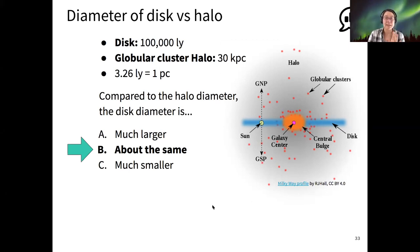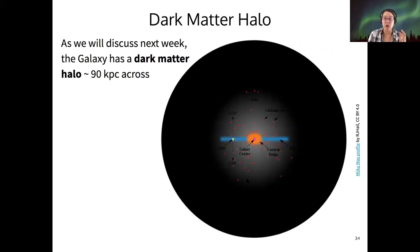And then this entire system is embedded within a much larger dark matter halo. So we can't see this, but we can infer its presence through gravitational signals. And we'll talk about that next week. The dark matter halo is about 90 kiloparsecs across. So it's by far the most dominant component of our galaxy and it in fact contains most of the total mass. So when we talk about the visible mass versus the total mass of the galaxy by the visible mass, I mean everything here within the halo and the disc.